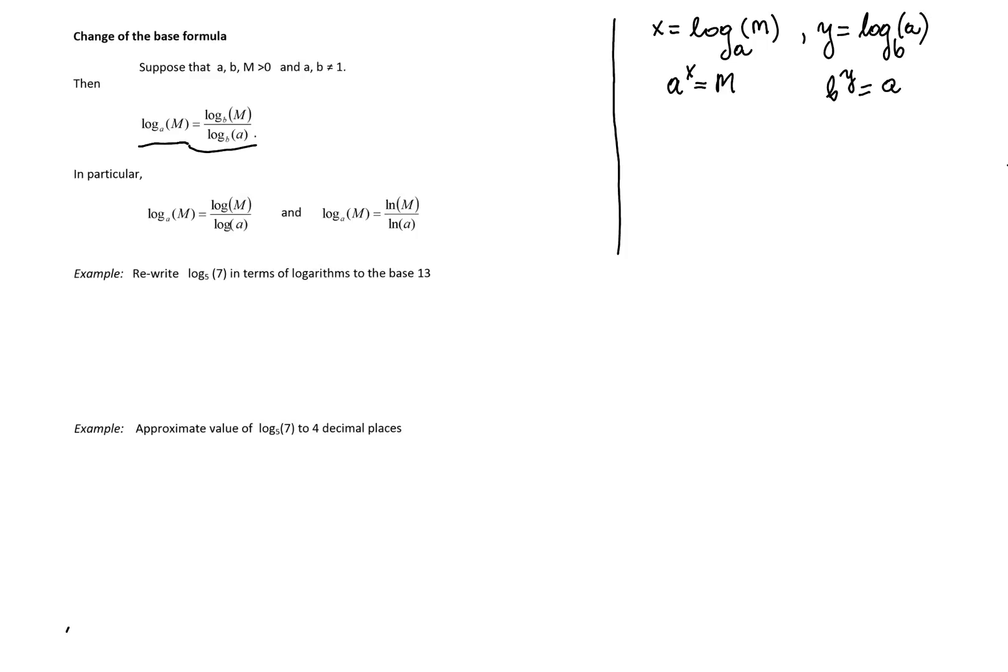Since A is B to the power Y, we can replace A in this expression by B to the power Y. What we'll have is B to the power Y raised to the power X is equal M. Properties of the exponent allow me to write it as one exponent, so this is B to the power XY is equal M. Changing this to the exponential form will give me XY is equal logarithm to the base B of M.